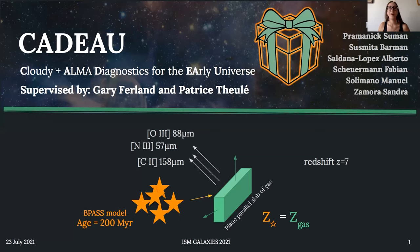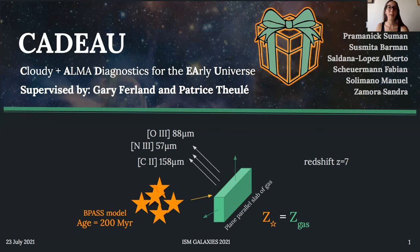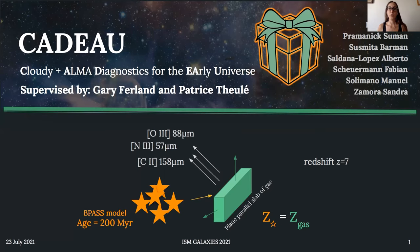I'm Gallagelli and I'm talking on behalf of the third Cloudy workshop group members which are listed here. We named our project CADO — Cloudy plus ALMA Diagnostic for the Early Universe. We simulated a high-redshift star-forming environment in order to provide useful diagnostic line ratios and diagrams to measure cloud properties like the metallicity or the density.